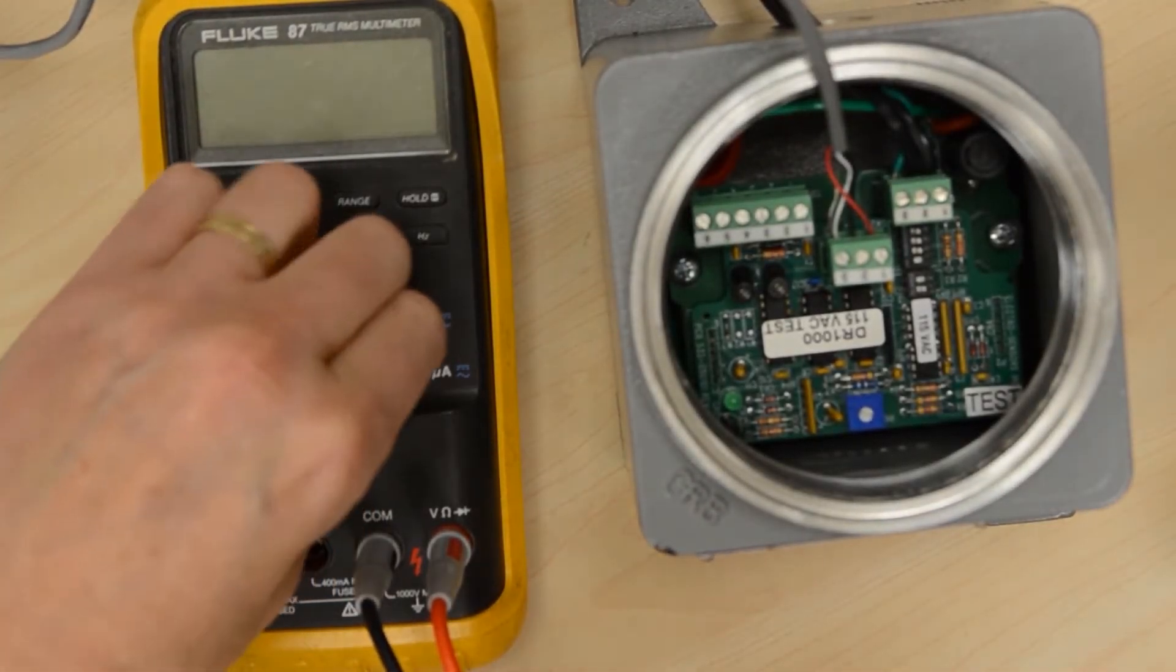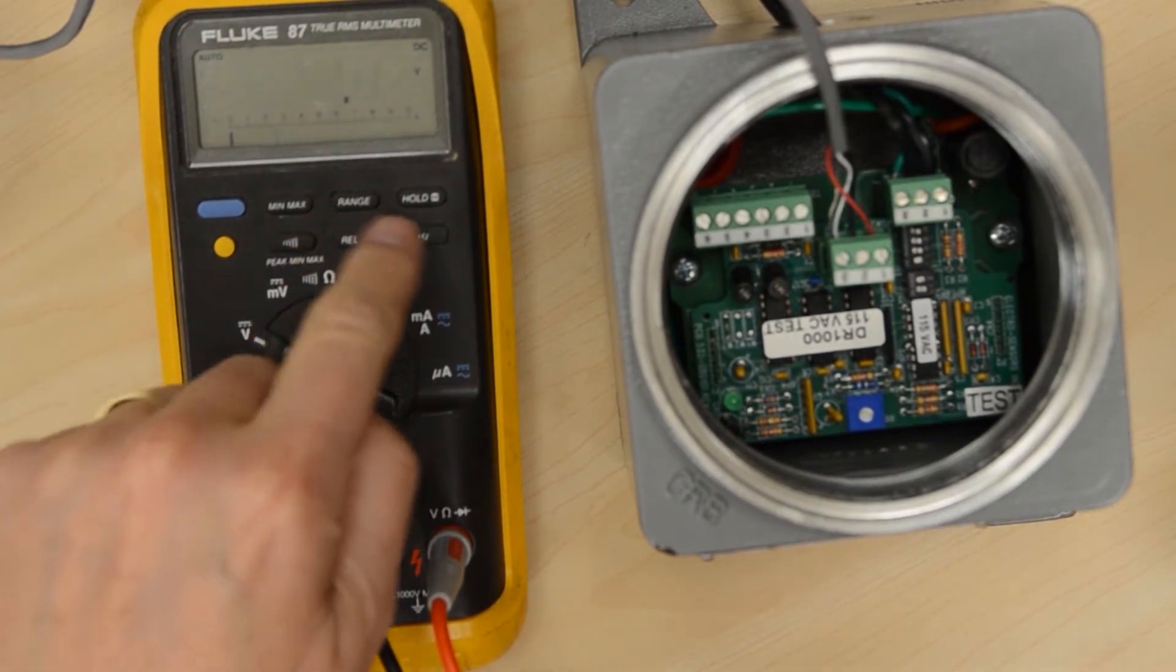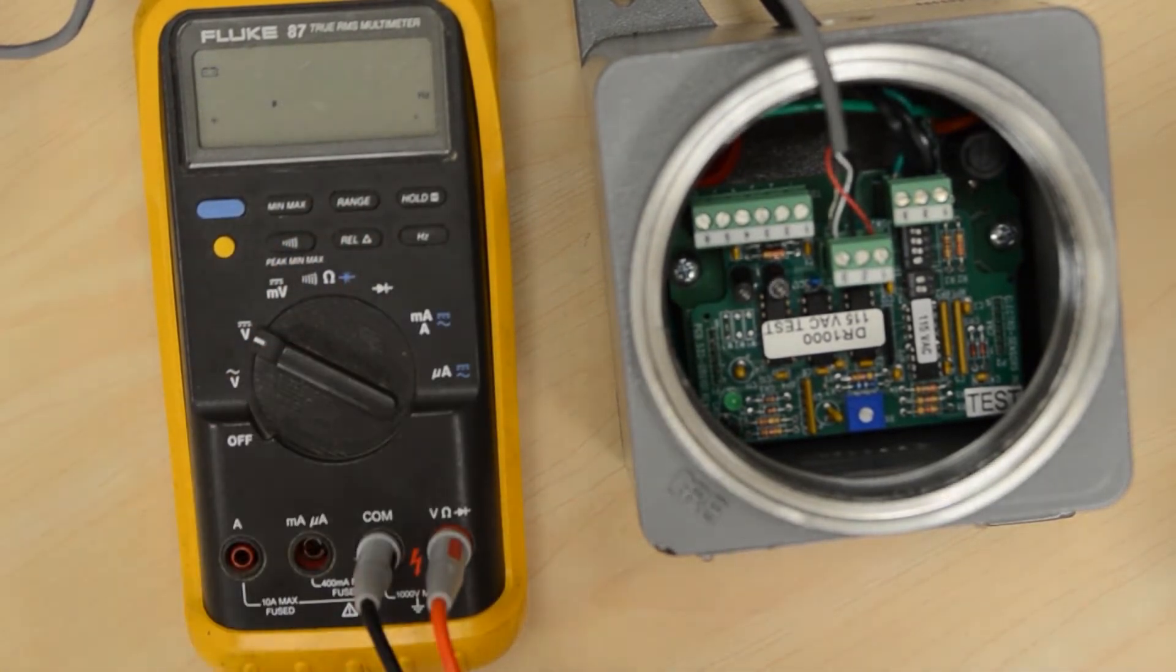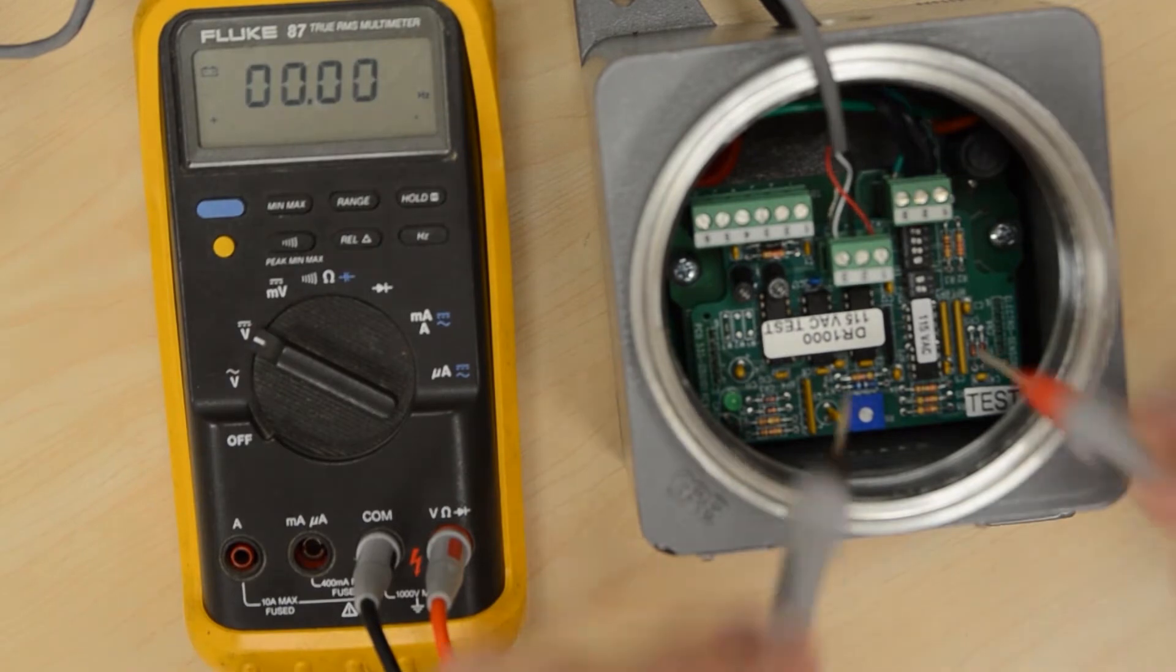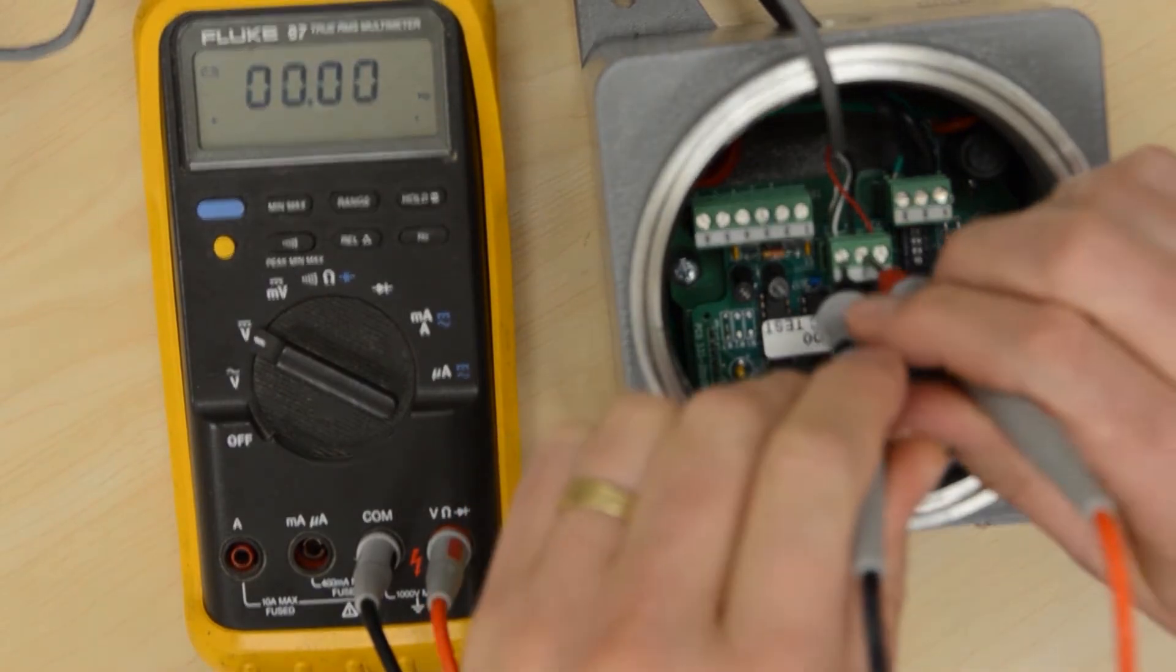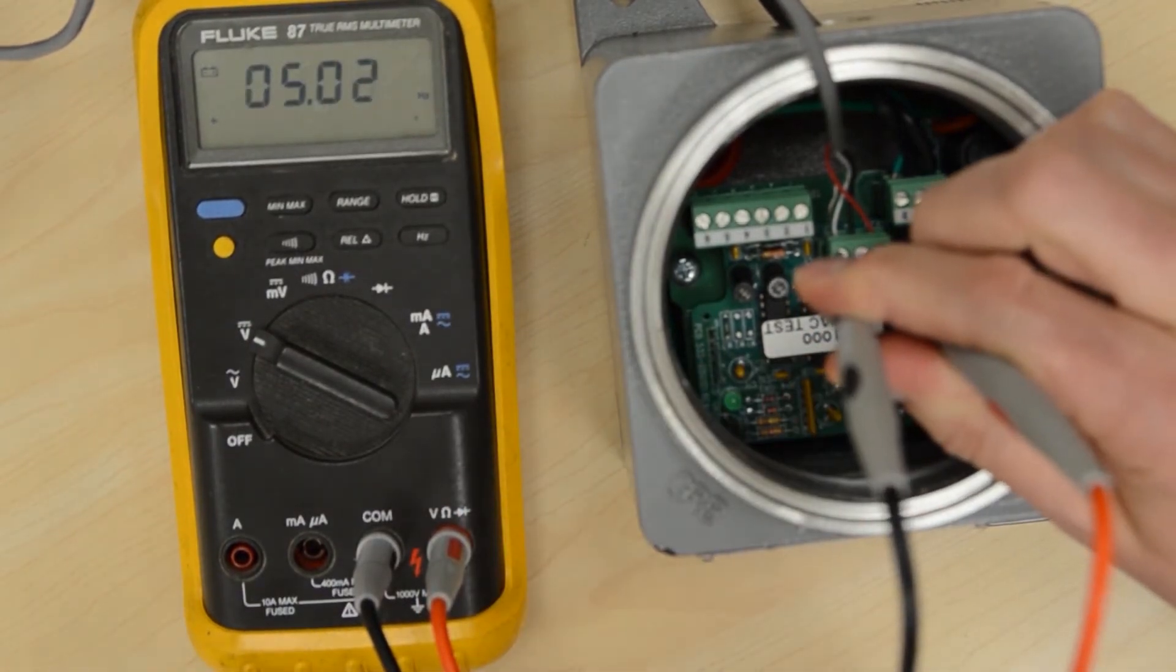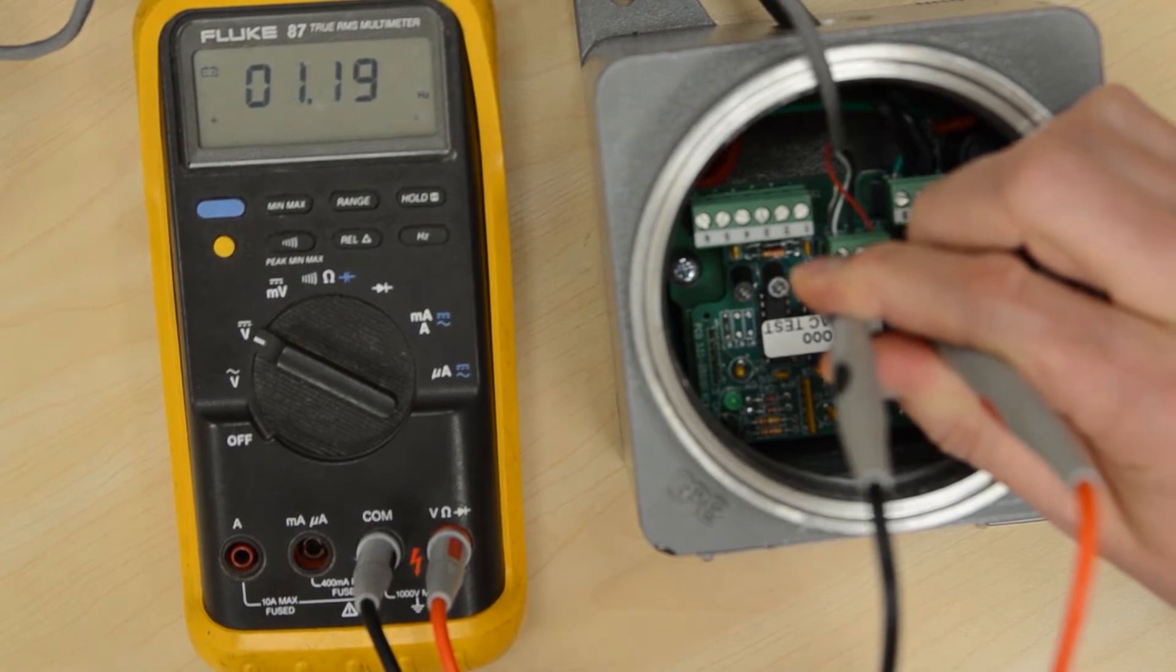When testing with a more advanced multimeter for frequency, you must place the meter in the Hertz mode and place the positive on TB2 pin 2 and the negative on TB2 pin 3. This will show the frequency.